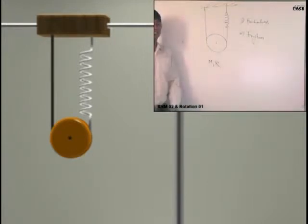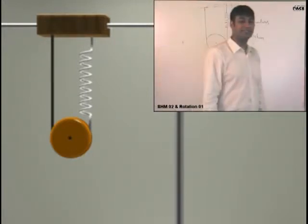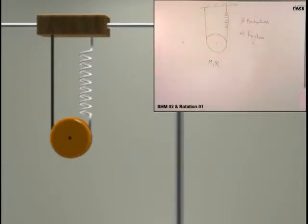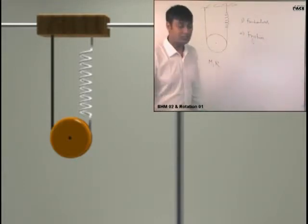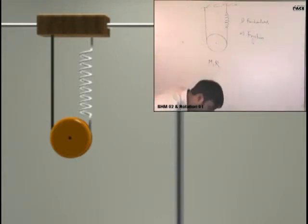First case the thread and pulley do not have any friction. Second case the thread and pulley have friction. So first case is frictionless. Second is with friction. Tell me what will be the time period in each case. Period of oscillation. You have to be very alert while doing this.